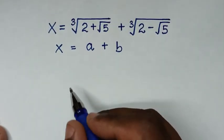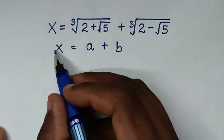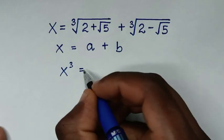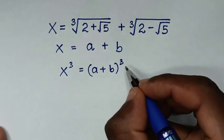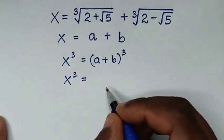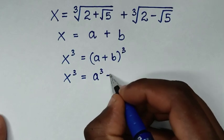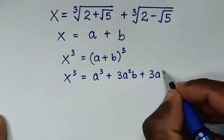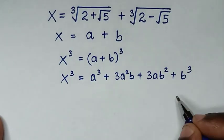Because we have this addition of cube roots, we will raise both sides to the power of 3. So it will be x cubed is equal to (a+b) cubed. Expanding, it is a cubed plus 3a squared b plus 3ab squared plus b cubed.